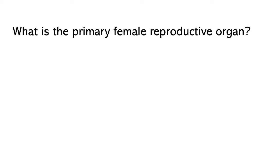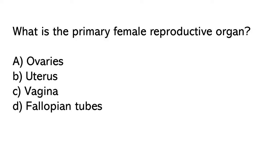What is the primary female reproductive organ? Options: A) Ovaries, B) Uterus, C) Vagina, D) Fallopian tubes. So the correct answer is option A. The primary female reproductive organ is Ovaries.